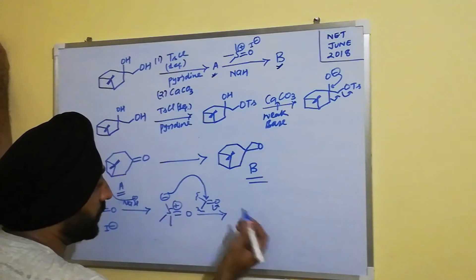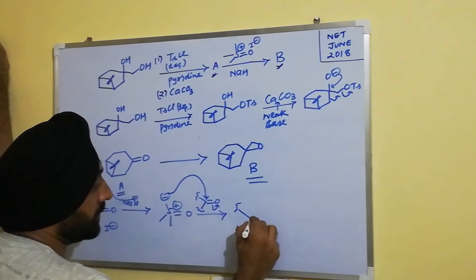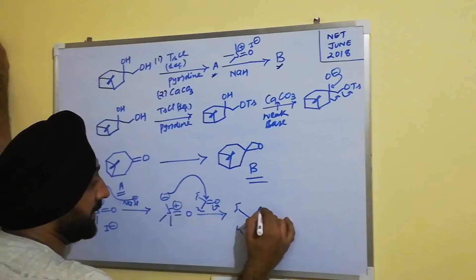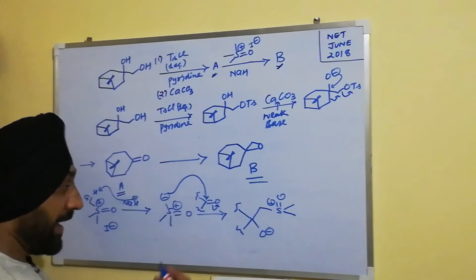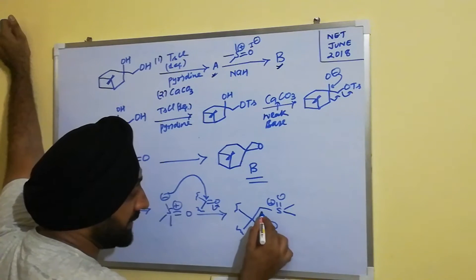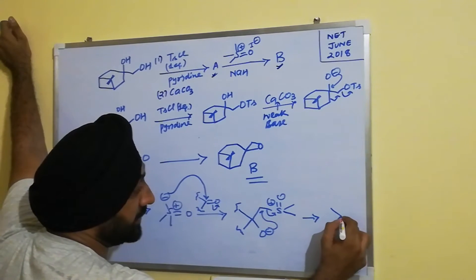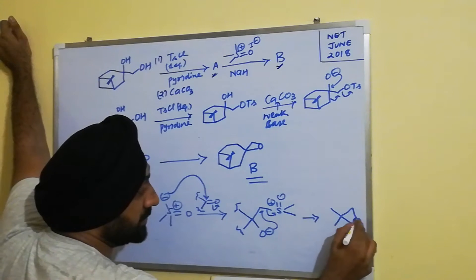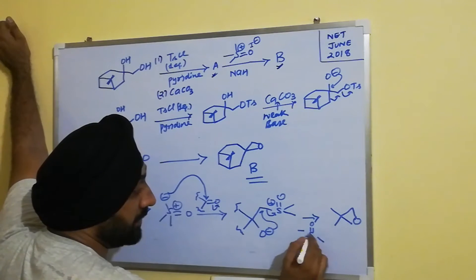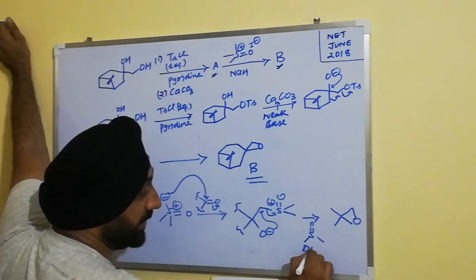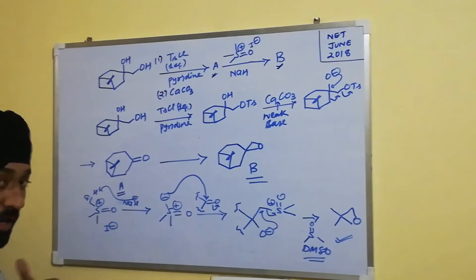After the carbanion attacks the carbonyl, we have one CH₂ group and two methyl groups on sulfur. The oxygen then attacks and releases the positive charge, and we end up getting an epoxide. The byproduct of this reaction is dimethyl sulfoxide (DMSO).